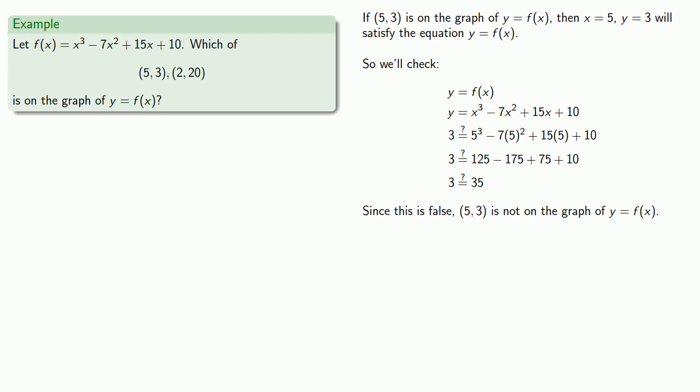Again, if it's not written down, it didn't happen. And so what we might write down here is that since f(5) is not equal to 3, then (5, 3) is not on the graph of y = f(x).